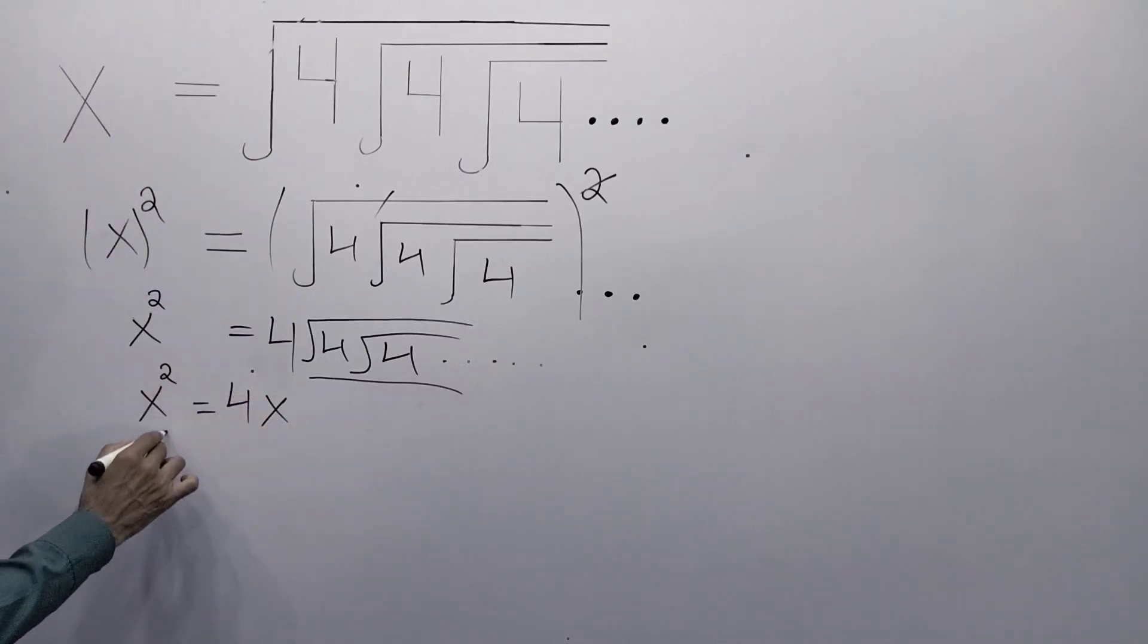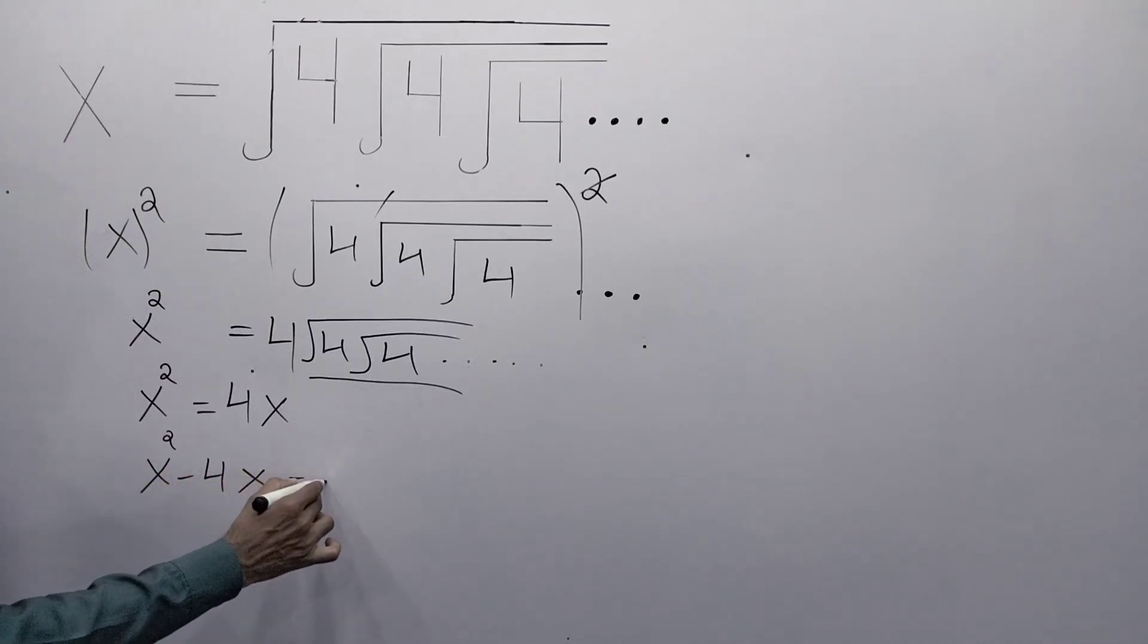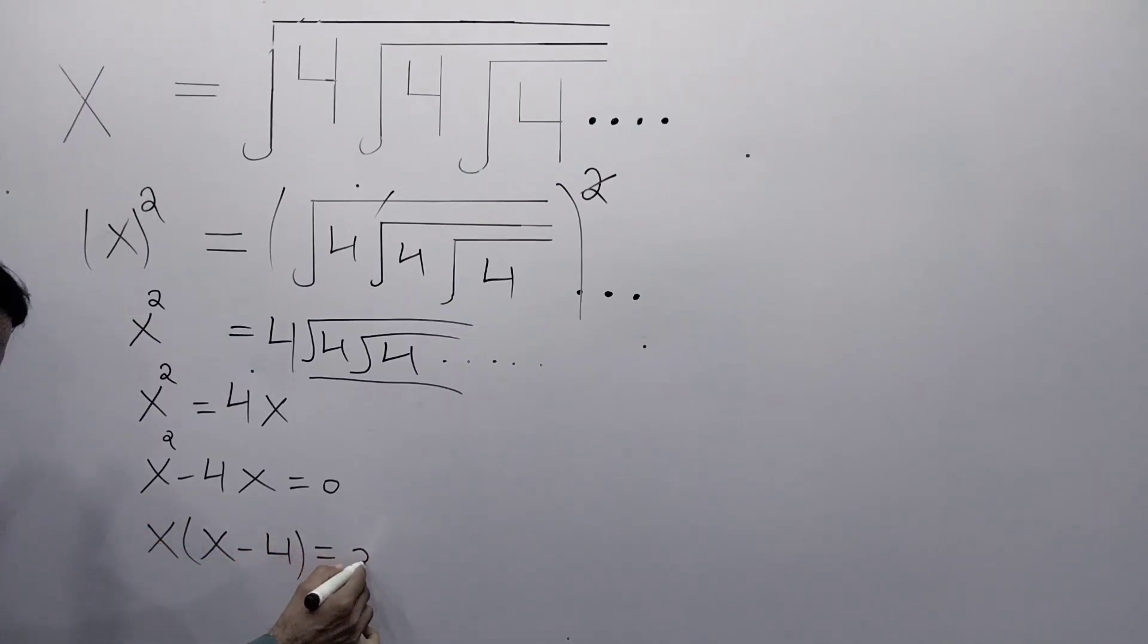Now x squared minus 4x equals 0. Taking x as common, x times (x minus 4) equals 0.